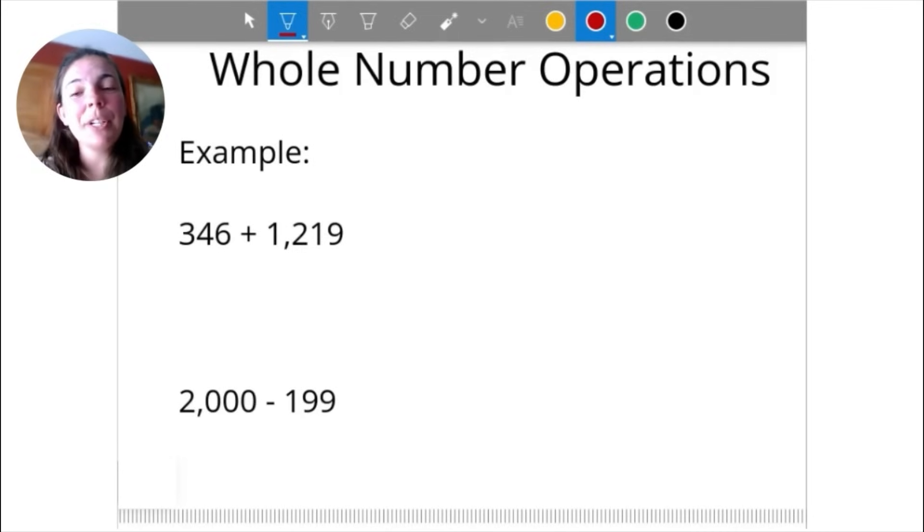Whole number operations. Here's a few examples of what you might see. 346 plus 1,219. Here's a little review about the algorithm we use when we are adding large numbers. We need to make sure place value is lined up. I'm going to put the larger number on top and then place this smaller number below so that it lines up. When I go to add, 9 plus 6 is 15. I have to carry my 1. 1 plus 1 is 2 plus 4 gives me 6. 2 plus 3 is 5. And then the 1 comes down, so we get 1,565.